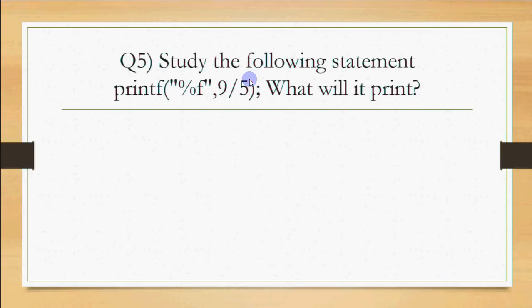Question 5: study the following statement — printf("%f", 9/5). What will it print? Here %f is used to print a float. However, 9 and 5 are both integers, so 9 divided by 5 gives an integer result of 1, not 1.8. Using %f will just display it as 1.0.